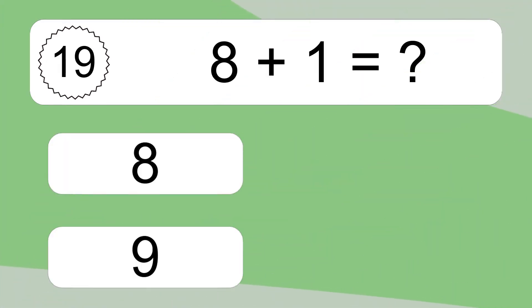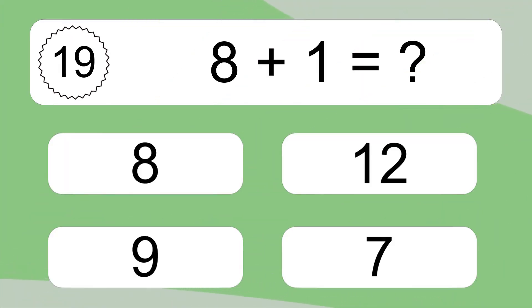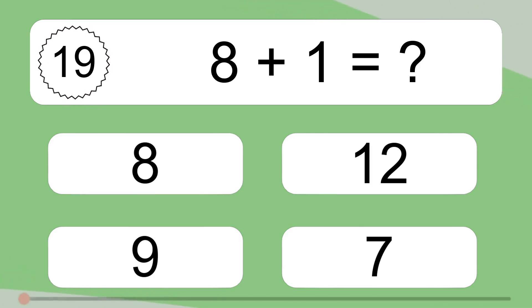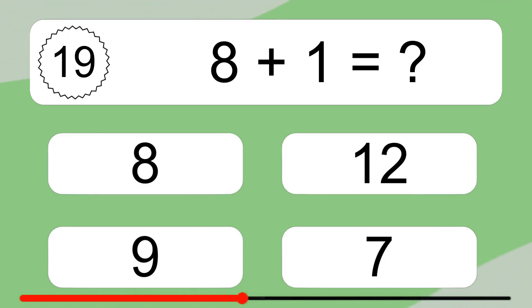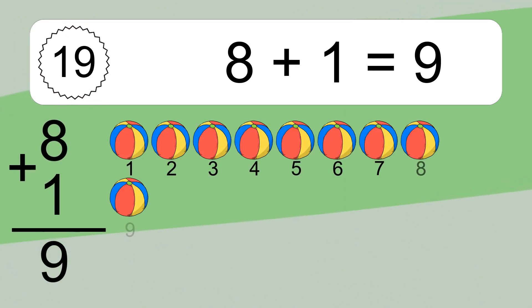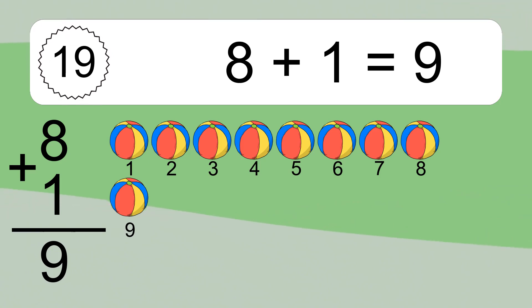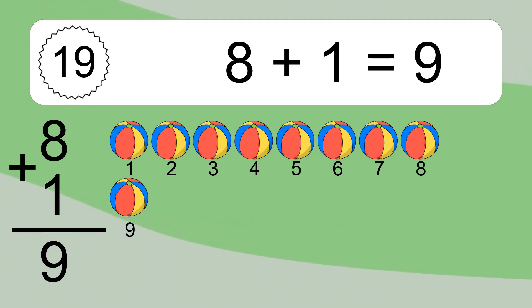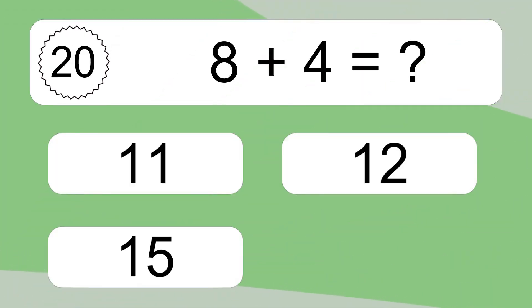8 plus 1 equals what? 8 plus 1 equals 9. Let's count it: 1, 2, 3, 4, 5, 6, 7, 8, 9.